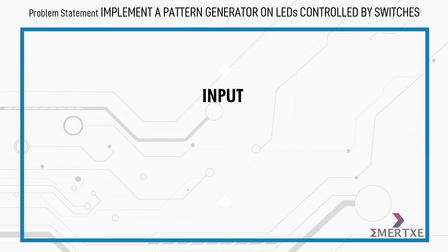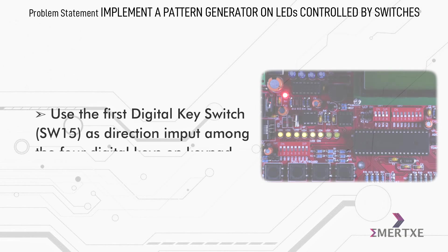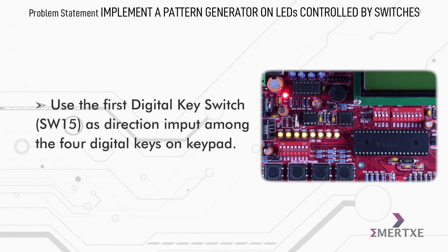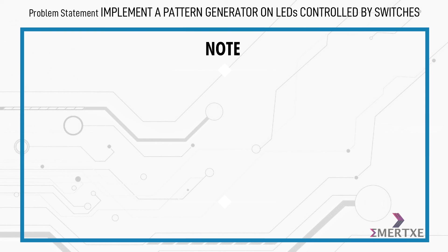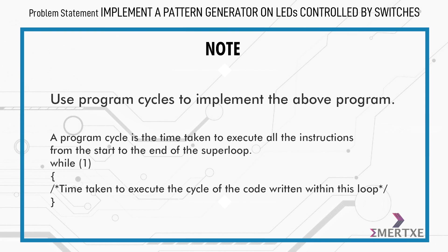The input required for this assignment is key switch controlled. Use the first digital key switch SW15 as direction input among the four digital keys on the keypad. Please note that you have to use program cycles to implement the above program.